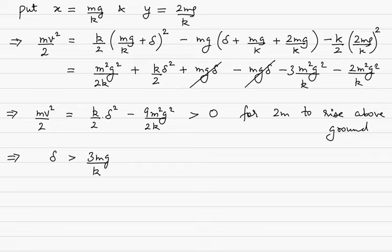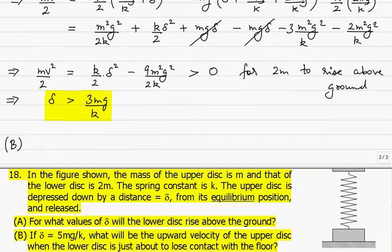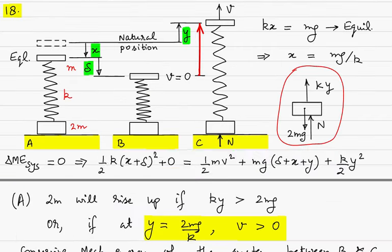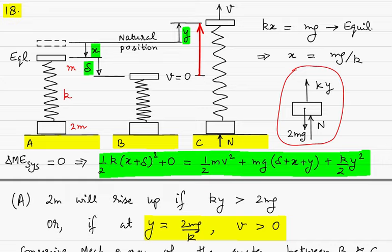So delta greater than 3mg/K is the required condition for the lower disk to rise above the ground. In part B, if delta equals 5mg/K, we find the upward velocity of the upper disk when the lower disk is just about to lose contact with the floor, which occurs at Y equal to 2mg/K. Substituting delta equals 5mg/K and Y equals 2mg/K into the energy equation, with X equals mg/K.